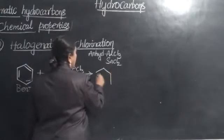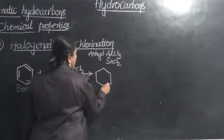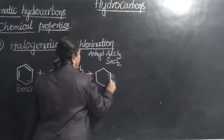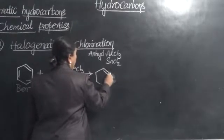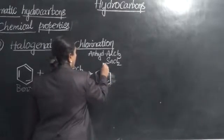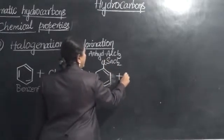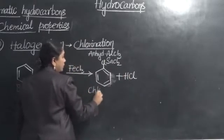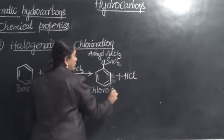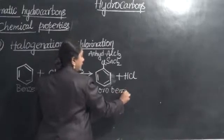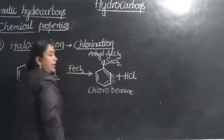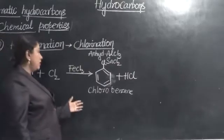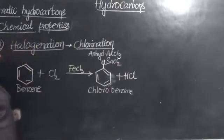Benzene upon chlorination will result in the formation of chlorobenzene along with HCl. So, this is how chlorobenzene is obtained by the chlorination of benzene.